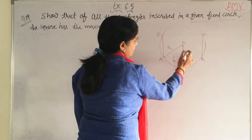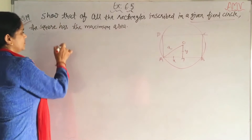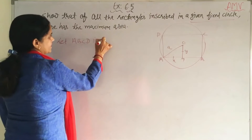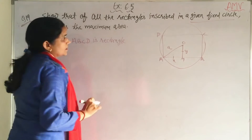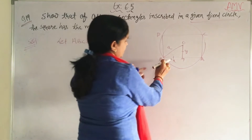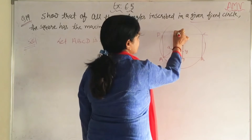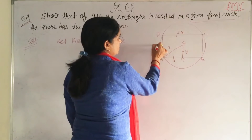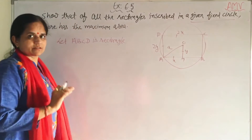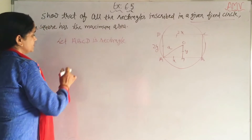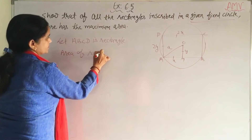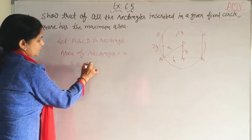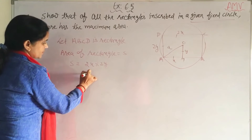Let AM = x and OM = y. Then the full length AB of the rectangle is 2x and the full breadth is 2y. So the area of the rectangle S = length × breadth = 2x × 2y = 4xy.